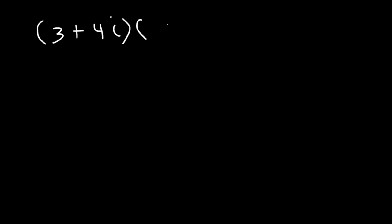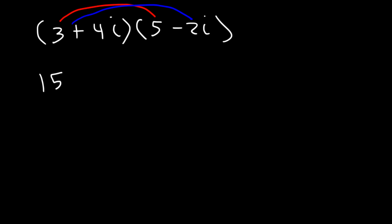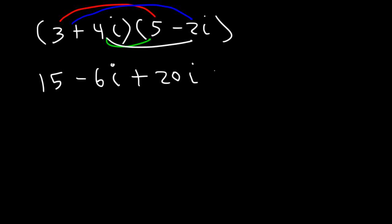Go ahead and multiply (3 plus 4i) times (5 minus 2i). We need to FOIL. 3 times 5 is 15. Next, 3 times negative 2i is negative 6i. Then 4i times 5 is positive 20i. Finally, 4i times negative 2i is negative 8i squared. It's always good to double check your work to make sure everything is correct.